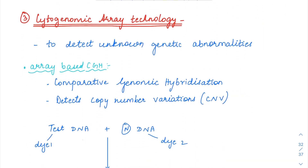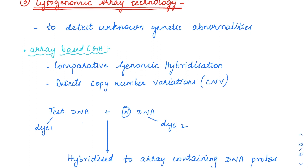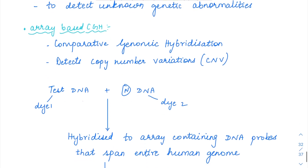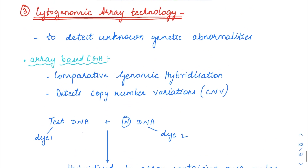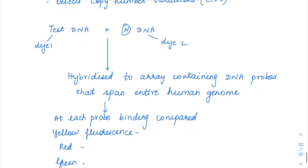The third technique is cytogenomic array technology. This is generally used for detecting unknown mutations — when you do not know where the causative gene is. They take the entire DNA probe of the human genome arranged in an array with multiple wells, each well containing human genome DNA probes. You add a test sample and a normal sample, then compare the expression. The first technique within this is array-based comparative genomic hybridization, which detects copy number variations.